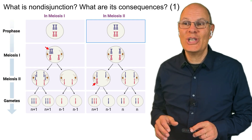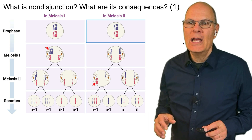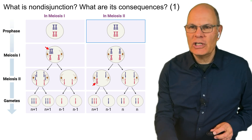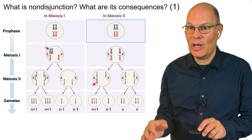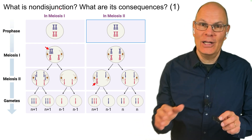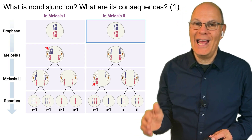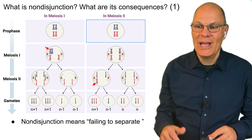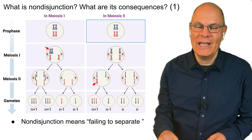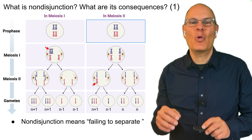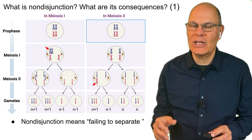What is nondisjunction and what are its consequences? Nondisjunction is a cool word. A junction is where things come together; a disjunction would be things coming apart; and nondisjunction means things failing to separate. It's when the homologous pairs or the sister chromatids don't separate during meiosis.